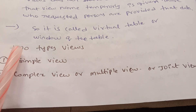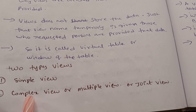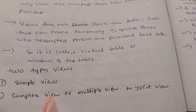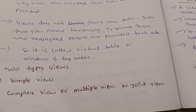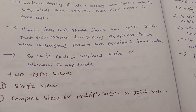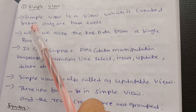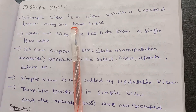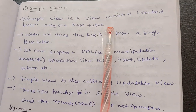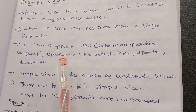There are two types of views: simple view and complex view. We also have multiple view and join view. A simple view is a view which is created from only one base table — a view created from a single database table.